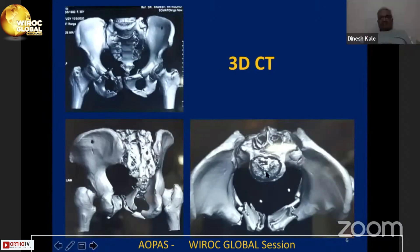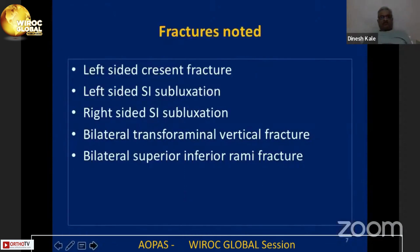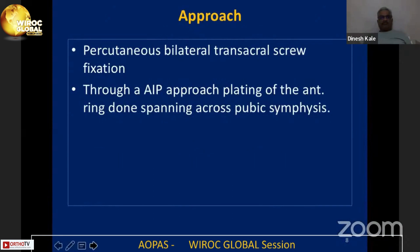You can very clearly see that this part of the sacroiliac joint has opened up, and here is the crescent fracture. In summary, the fractures noted are: left-sided crescent fracture, left-sided SI subluxation, right-sided SI subluxation, bilateral transforaminal vertical fractures, and bilateral superior and inferior rami fractures.